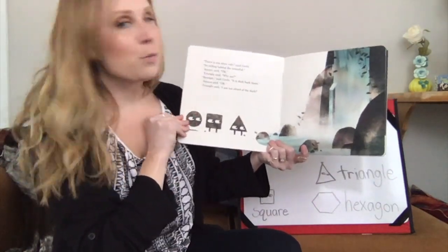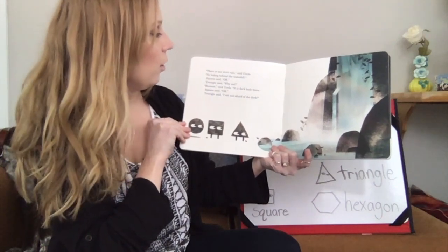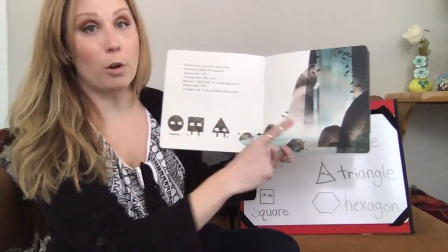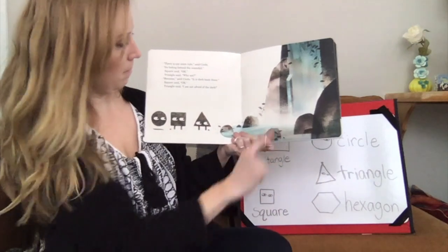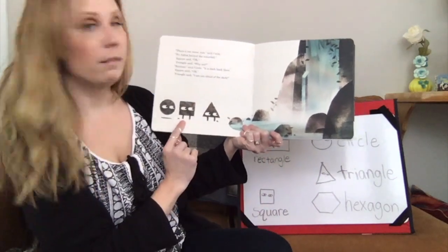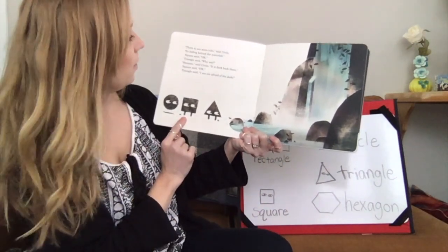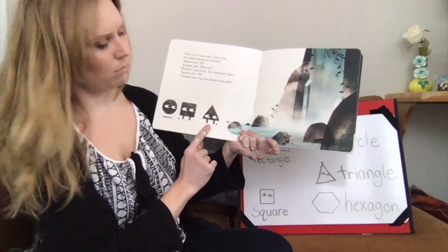There is one more rule, said Circle. No hiding behind the waterfall. Square said, okay. Triangle said, why not?